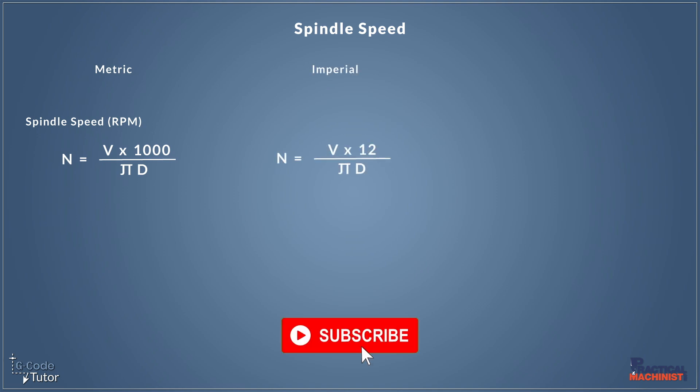So the imperial equation is very similar. It's N equals V times 12 over pi times D. And when two characters are written next to each other on the bottom here, like pi and D, we assume they're being multiplied. So the imperial equation is almost identical. We're just timing V by 12 and not by a thousand.